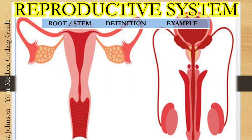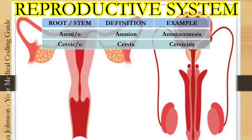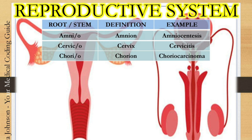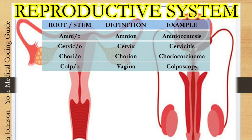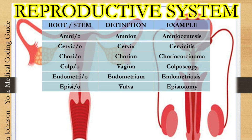The following root words pertain to the female reproductive system. The female organs are composed of the fallopian tube, uterus, ovaries, endometrium, fimbria, cervix, and vagina. Amnio — it means amnion. Example: amniocentesis, which is puncture aspiration of the amniotic fluid. The next one is cervico — cervico means cervix. Example: cervicitis, which means inflammation of the cervix. The next one is chorio — it means chorion. Example: choriocarcinoma, which is a neoplasm of the chorion. The next one is colpo — colpo means vagina. Example: colposcopy, which is investigation of the vagina through a scope. The next one is endometrio — which means endometrium. Example: endometriosis, which means abnormal growth of the endometrium outside the uterine lining. The next one is episio — episio means vulva. Example: episiotomy, which means surgical cut of the vulva.